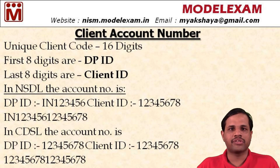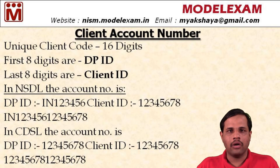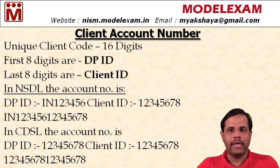Now let us see what is the format in NSDL. In case of NSDL, all account numbers start with IN. See here, we have given an example. The DPID starts with IN — so IN followed by 6 more characters, making it an 8-digit number. This represents the DPID.